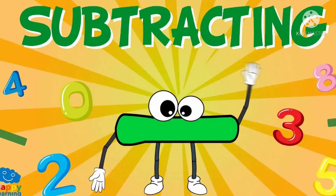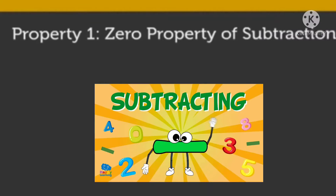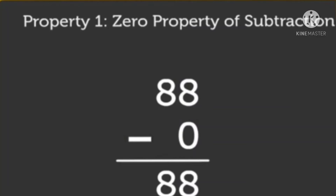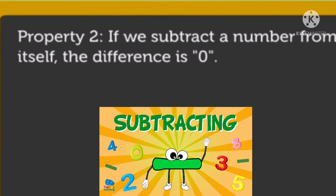Hello everyone, today we will see about subtraction properties. Property 1: Zero property of subtraction. When we subtract 0 from a number, the difference will be the number itself. Example: 88 minus 0 is 88. Property 2: if we subtract...